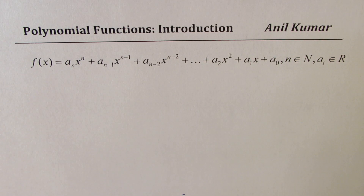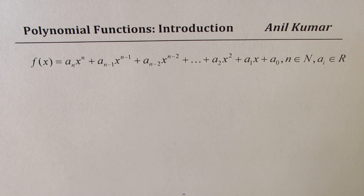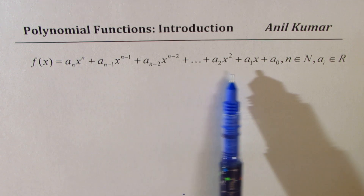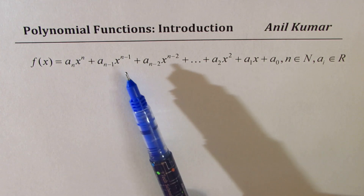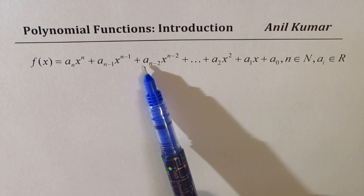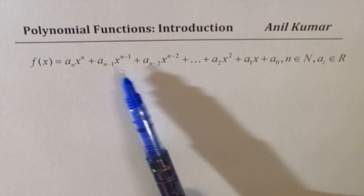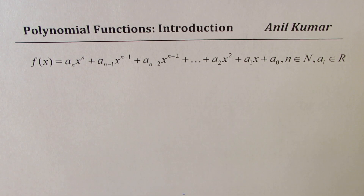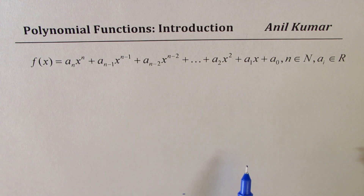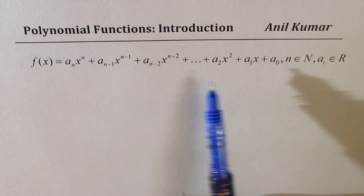I'm Anil Kumar sharing with you a very important concept about polynomial functions. I'm going to introduce polynomial functions in a slightly different way. Normally, a function of this form is called a polynomial where the exponents are whole numbers and the coefficients are all real numbers. Each exponent is a whole number — it cannot be negative or rational — and all coefficients are real numbers.